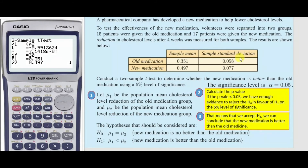Once the p-value is calculated, if the p-value is less than 0.05 — which is our significance level — in our case it is, we have enough evidence to reject H0, the null hypothesis. Because it is less than 0.05 we reject it, and we support the H1 statement on the 5% level of significance. In conclusion, the new medication is better than the old medication, because we are accepting H1 and rejecting H0.